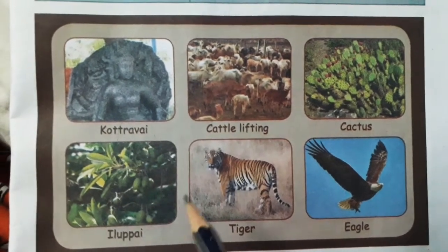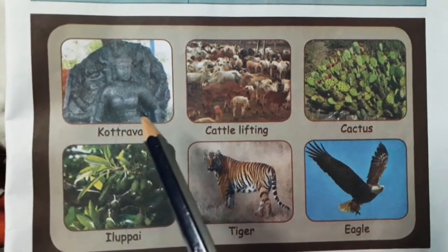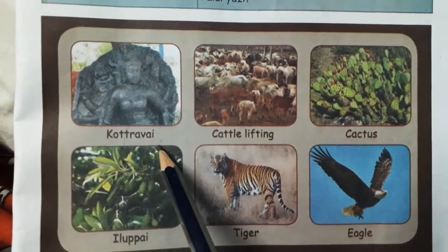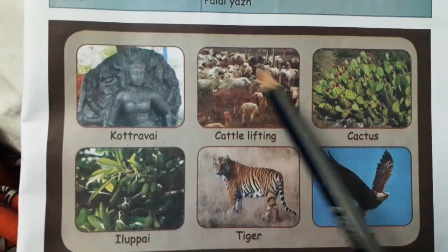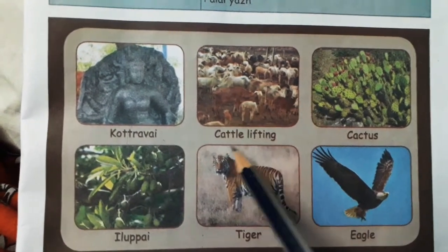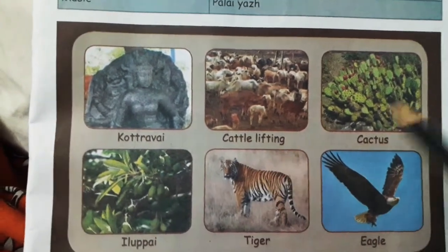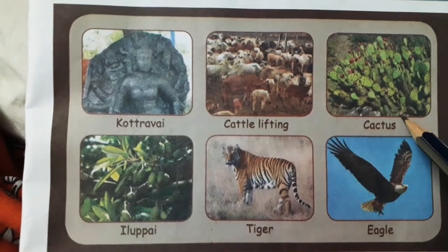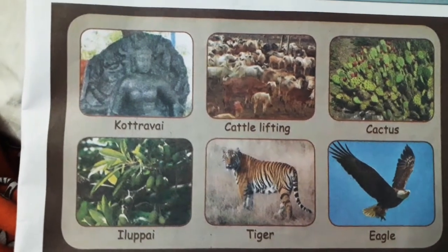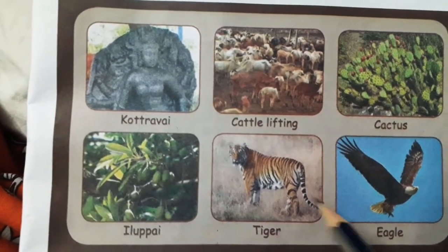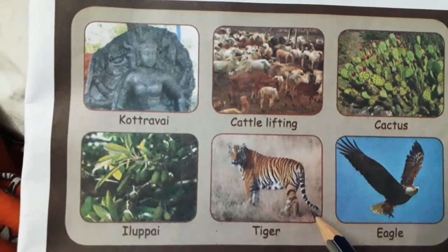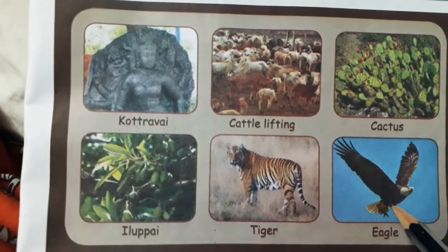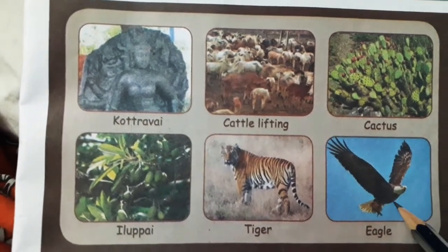From this picture you can remember their theme easily. Their god was Kottravai, their occupation was cattle lifting, their flowers were cactus and Illupai, their animal was tiger, and their bird was eagle.